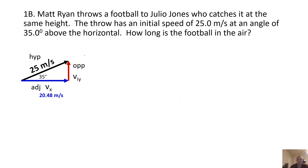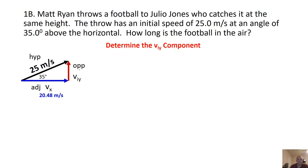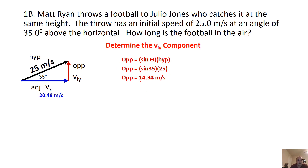Keeping that information because we're going to need that for this problem. The next question asks how long is the football in the air. We want to go ahead and determine the VIY component so we can make a givens list. We're going to do opposite over hypotenuse — we're going to go to sine. Opposite equals sine of the angle times hypotenuse — that's the 35 and the 25. We plug in our values and we get 14.34.